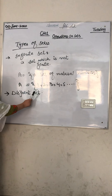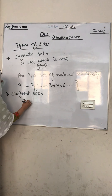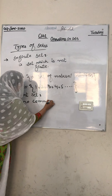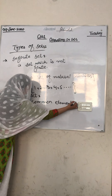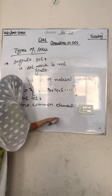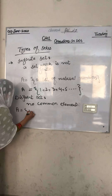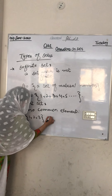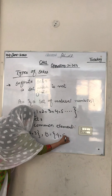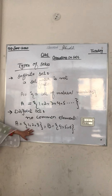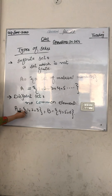Okay friends, this is a disjoint set. What is a disjoint set? A disjoint set means no common element. For example, we have two sets: A = {1, 2, 3} and B = {4, 5, 6}. So this is a disjoint set because no element is common.